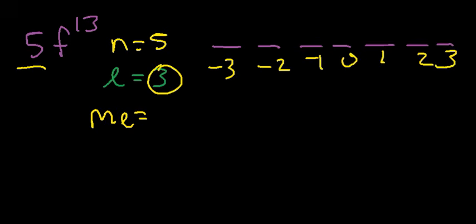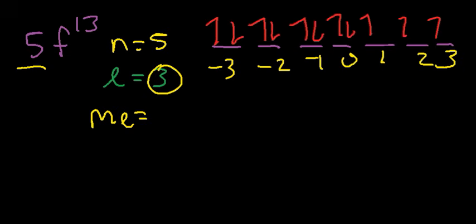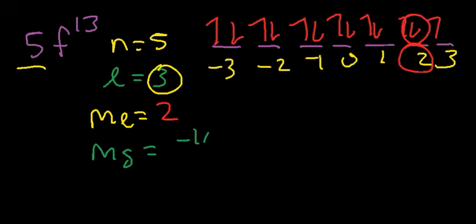We're interested in the thirteenth electron. It landed in this orbital, so ML is two. And it's a down arrow, so the electron spin is negative one half. That's how you can find the four quantum numbers given the electron.